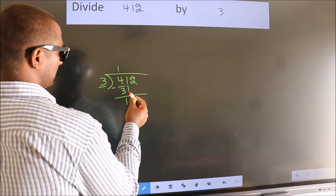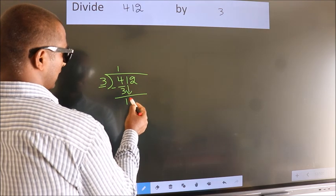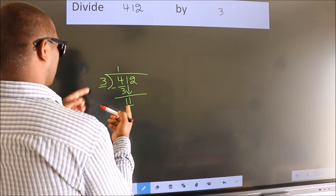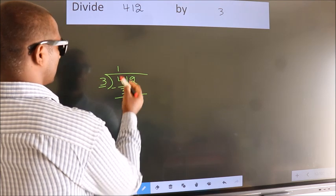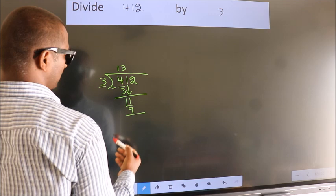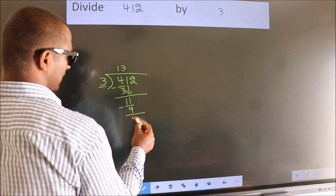After this, bring down the beside number, so 1 down, so 11. A number close to 11 in 3 table is 3 3s 9. Now we subtract, we get 2.